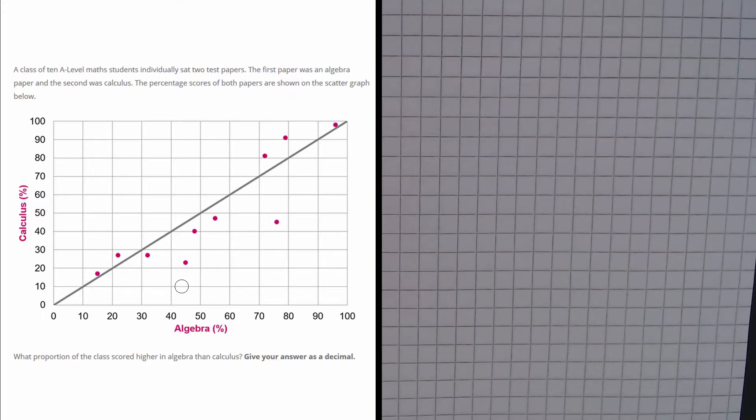So we just need to count the amount of dots that are below the line, and we can see we have 1, 2, 3, 4, 5.